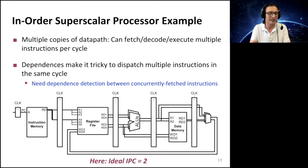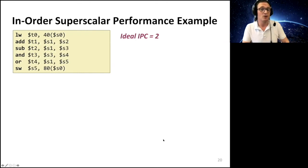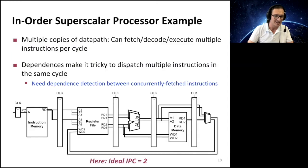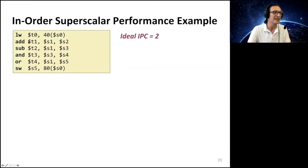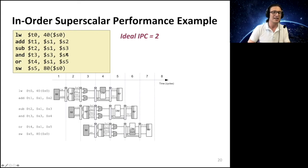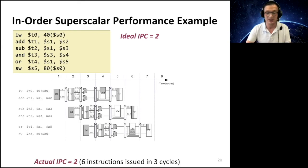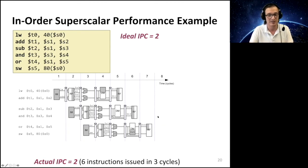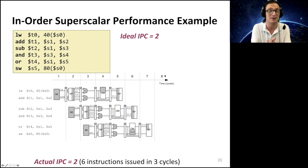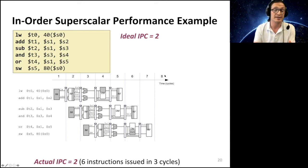For the performance of an in-order superscalar machine: if all instructions are independent of each other, you get the ideal IPC — you can issue six instructions in three cycles. Superscalar execution is not the same as multi-threading. In superscalar you're fetching from the same thread — the same program — fetching instruction at PC and PC+4. In multi-threading you fetch from different threads every cycle. You can combine superscalar with multi-threading, but superscalar normally refers to fetching multiple consecutive instructions from a single program.